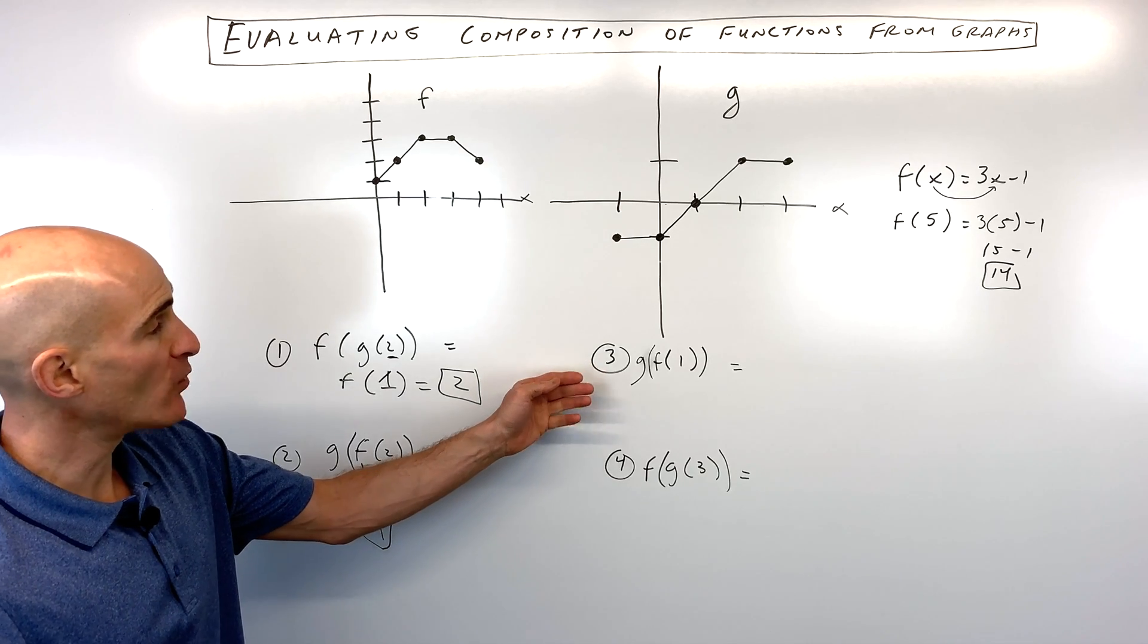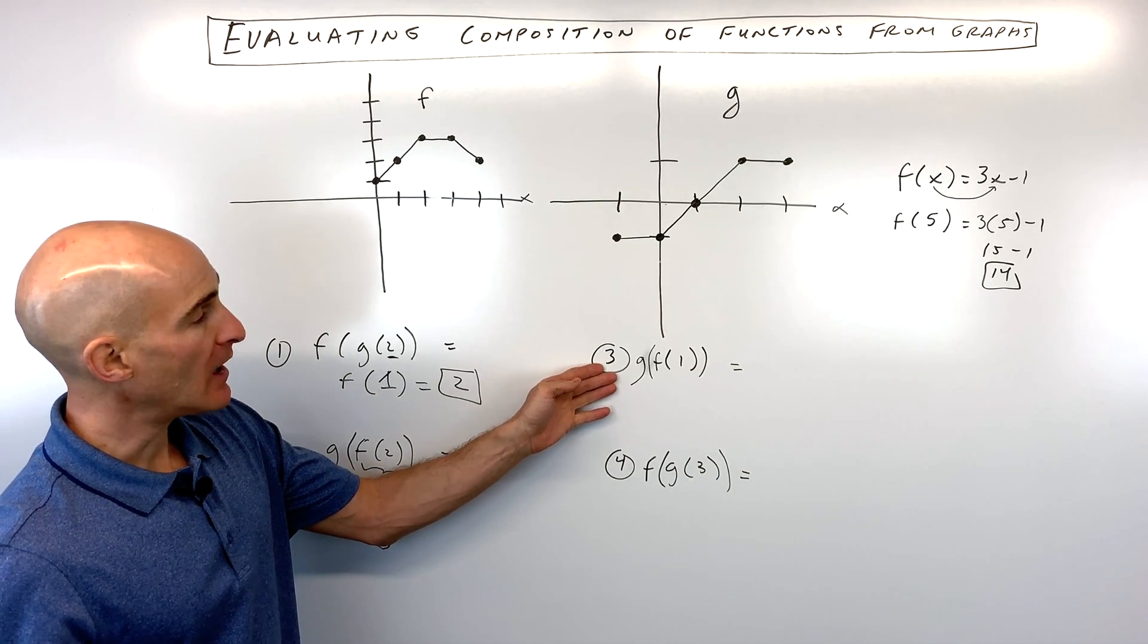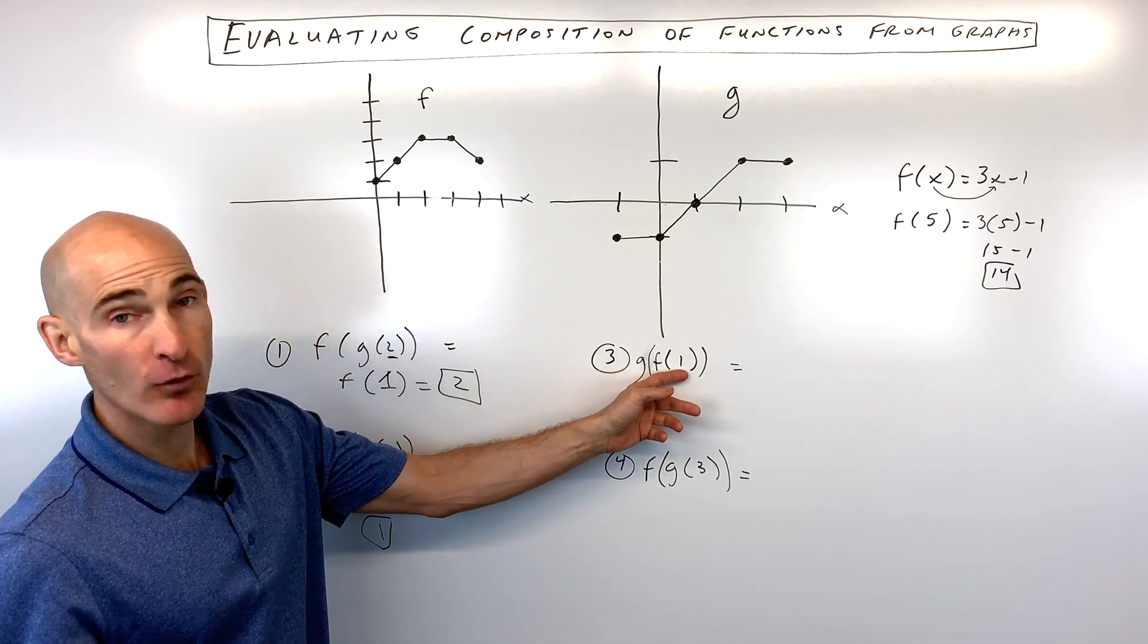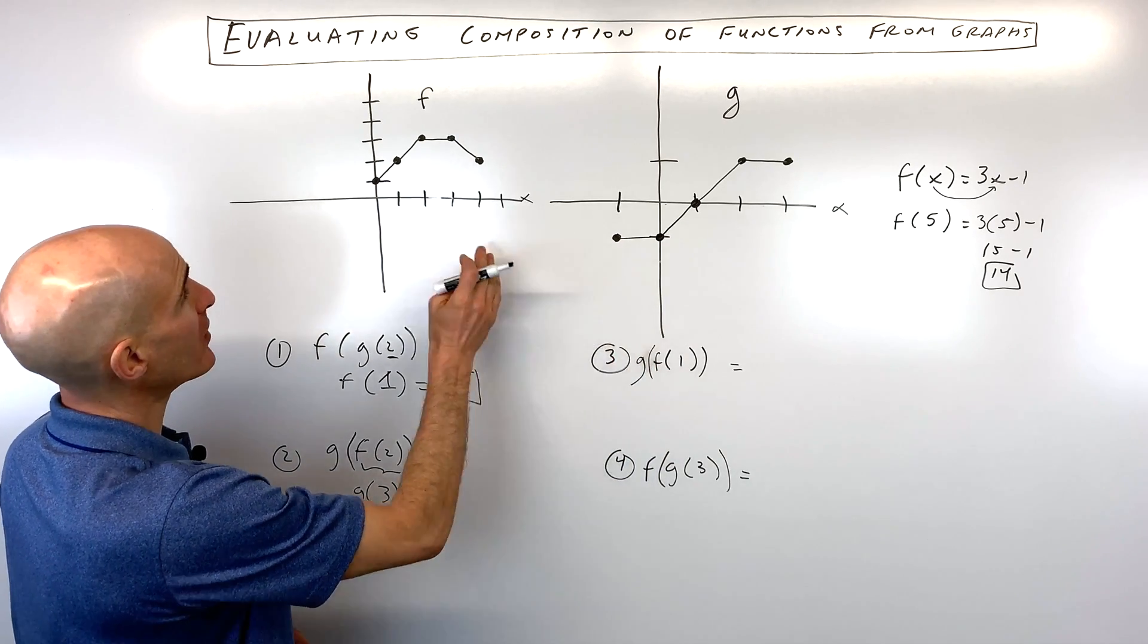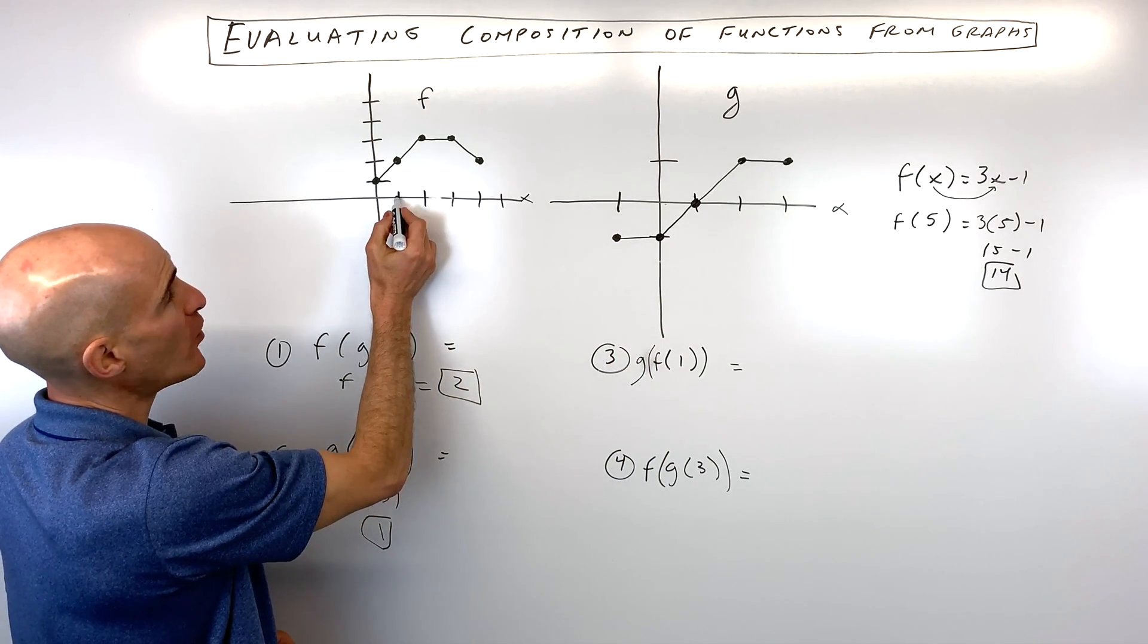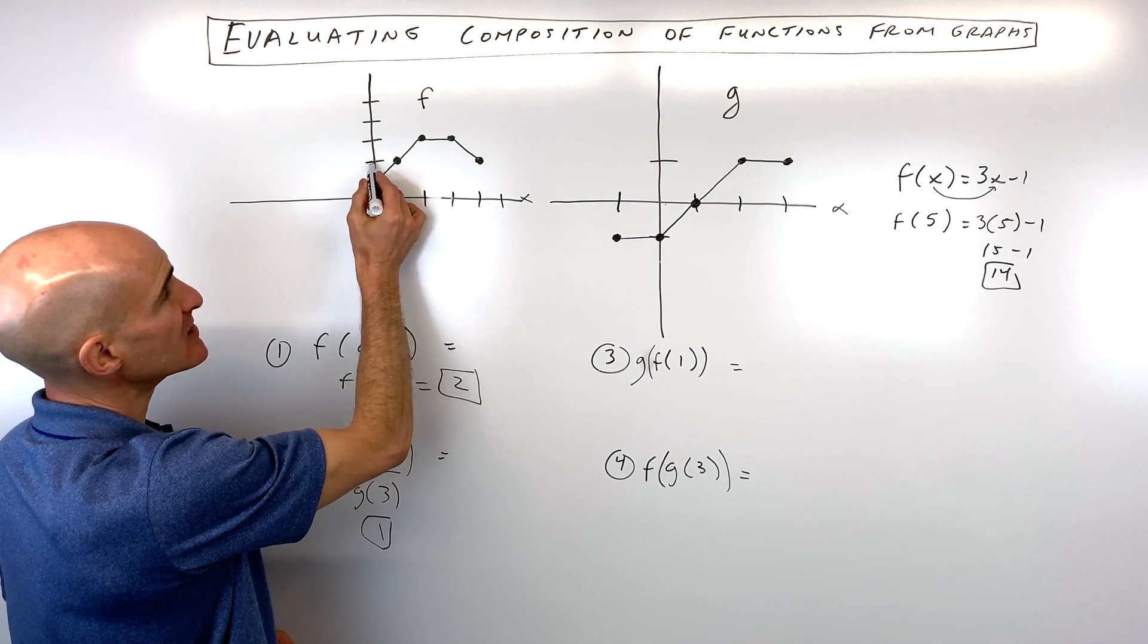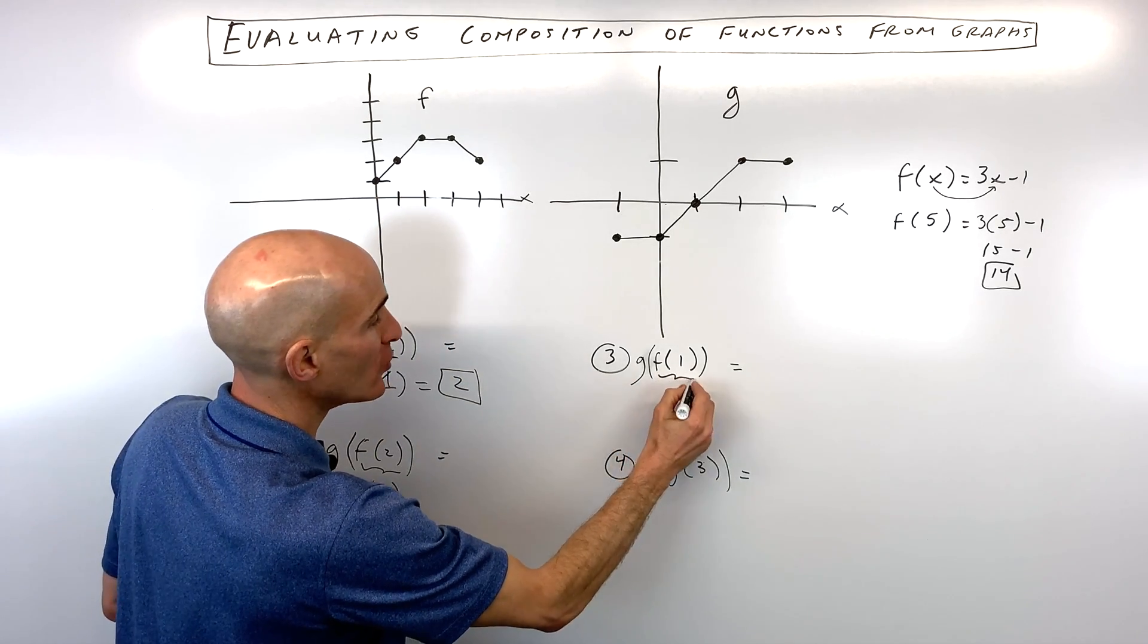Two more examples. See if you can do these if you want. Go ahead and pause the video. Number three, we've got g of f of 1. So same thing. We start on the inside. We say go to our f function. When x equals 1, we go up to the graph. We can see that the y value is equal to 2. So this whole quantity is 2.